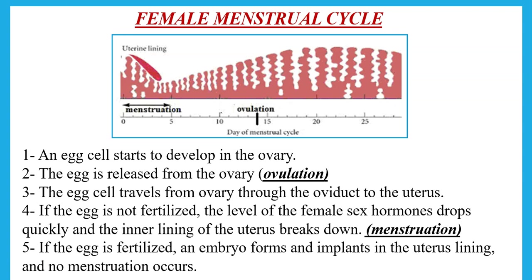If the egg is not fertilized in the oviduct, the female hormones drop and the inner lining of the uterus begins to break down — this is called menstruation. Menstruation is given as day one of the menstrual cycle and lasts about five to seven days. After that, the uterus lining starts to thicken again, and by day 14 another egg is released and the cycle continues. If the egg is fertilized, the embryo implants in the uterus lining and no menstruation occurs.